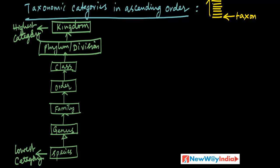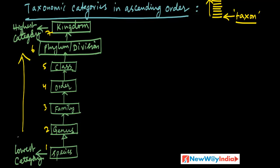The taxa are presented in a hierarchical manner from bottom to top — that is why it is called taxonomic hierarchy. Each one is a rank or category, technically called a taxon. There are seven taxa: species, genus, family, order, class, phylum, and kingdom — arranged hierarchically from species to kingdom.